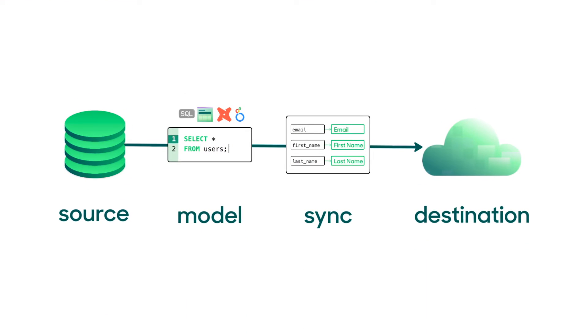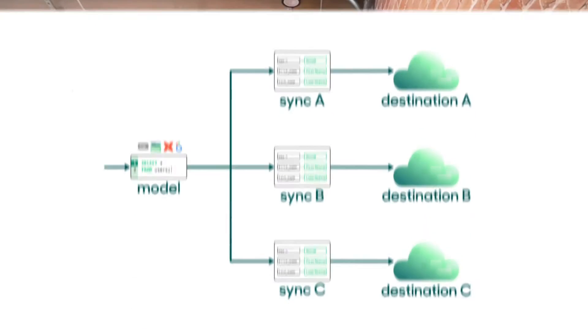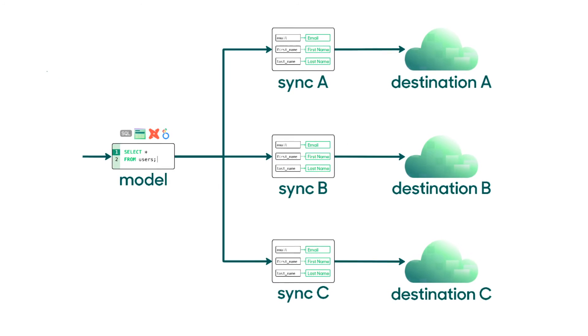How does reverse ETL actually work at a technical level? The high-level process is: connect to a source — a data warehouse — run a SQL query, table, or view on a regular schedule, then translate that data into API calls for a destination system. Each destination like Salesforce, Braze, or Facebook has its own nuances and desired state. Finally, you need a scalable platform to execute those API calls and get the data into these systems.